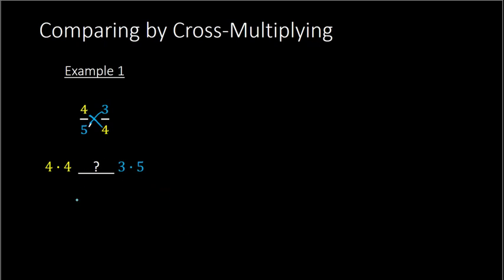We compare these numbers. 4 times 4 is 16, 3 times 5 is 15, 16 is greater than 15. So that means because 16 is greater than 15, 4 fifths is greater than 3 fourths. By the way, those three dots mean therefore. So therefore, 4 fifths is greater than 3 fourths.